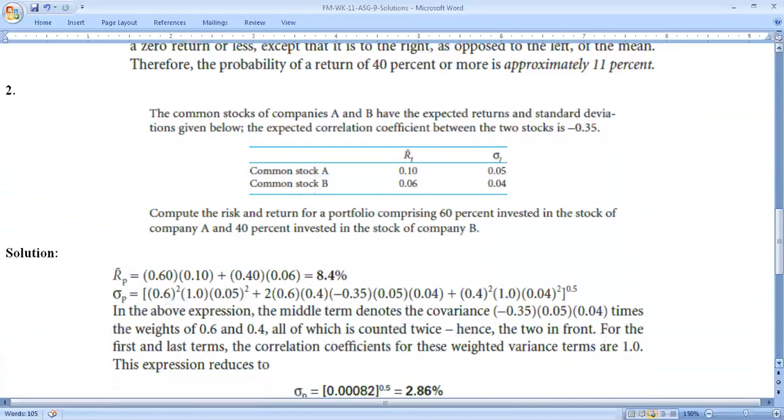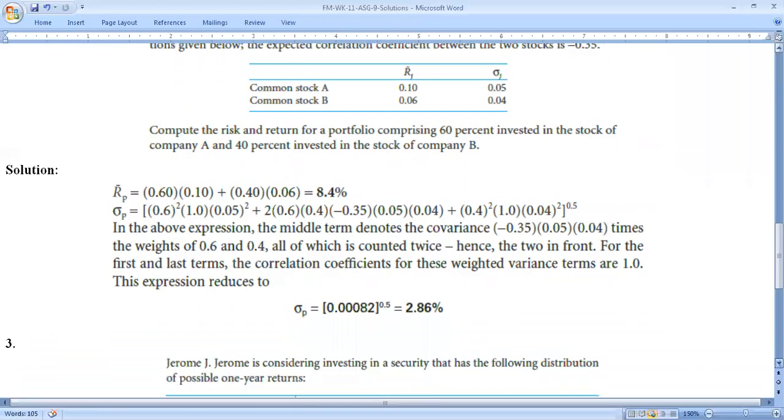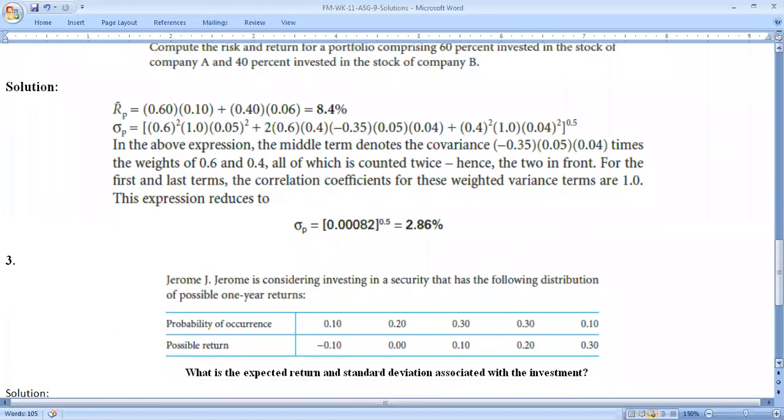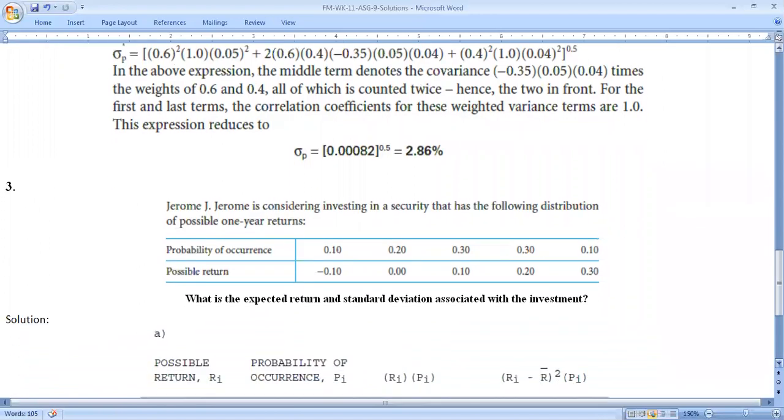Now Question 2: The portfolio investment was very easy. You multiply weight by return, this gives 8.4%. Then use the standard deviation formula. The standard deviation calculated is 2.86. I gave you the same solution. So you can ask questions, you can ask with your classmates. I will ask questions that are easy. You'll find the answers easily.